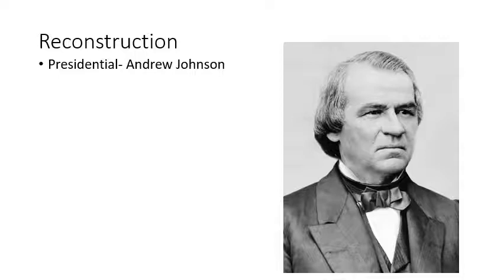This brings us to Presidential Reconstruction, which is considered to be 1865 through 1867. Reconstruction's policy initially falls on Andrew Johnson, the new president after Lincoln is assassinated. Johnson extended pardons and restored property rights to many white Southerners who swore oaths of allegiance to the Union and the Constitution. There was nothing under Johnson about voting rights or civil rights for former slaves.